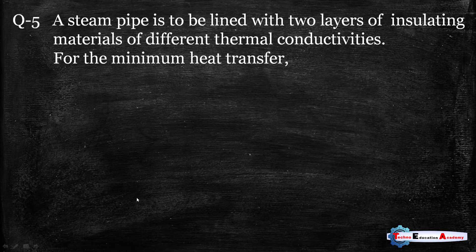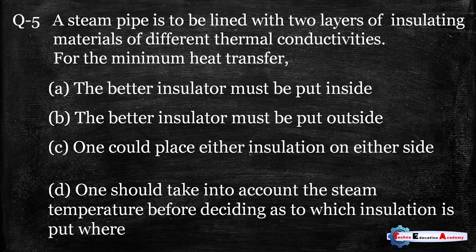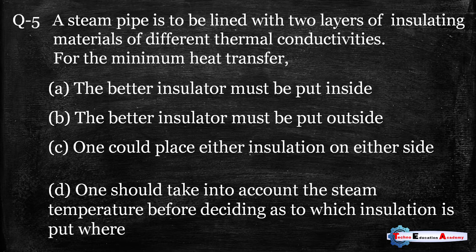Question number five: A steam pipe is to be lined with two layers of insulating materials of different thermal conductivities. For minimum heat transfer — option A: the better insulator must be put inside; option B: put outside; option C: either side; option D: consider steam temperature first. Whenever we put the better insulator inside, it will prevent more heat from being rejected to the atmosphere. So the right answer is option A — the better insulator must be put inside for minimum heat transfer to the surroundings.